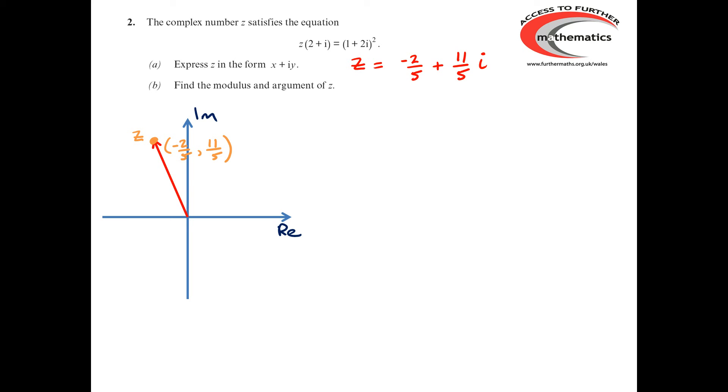The modulus of z is the length of the line joining the origin to the point representing z. So, by Pythagoras, we've got mod z is the square root of (-2/5)² plus (11/5)². And that comes rapidly through to give us mod z equals √5.